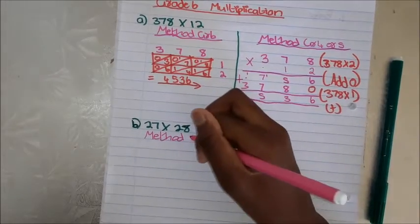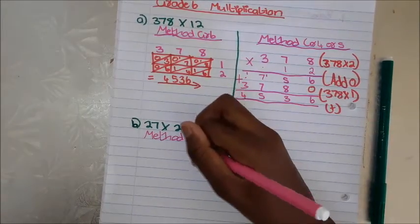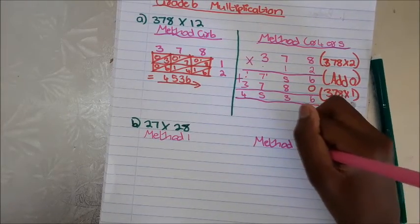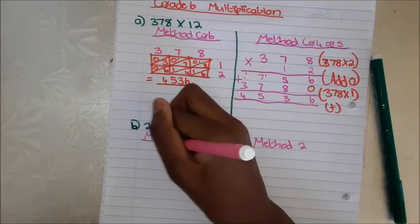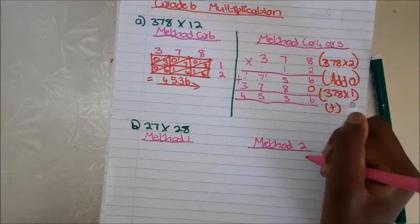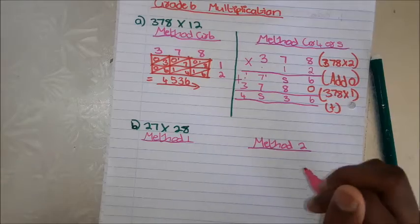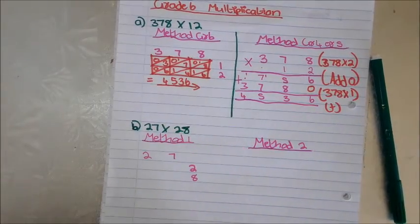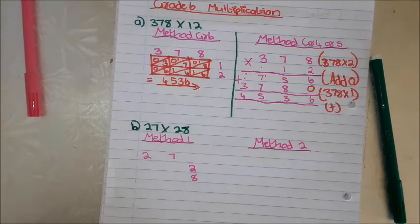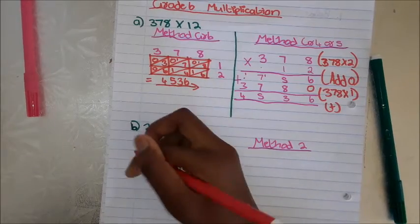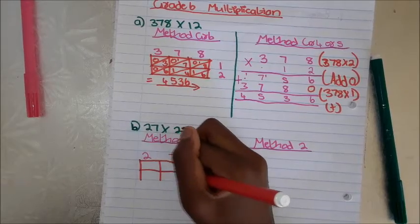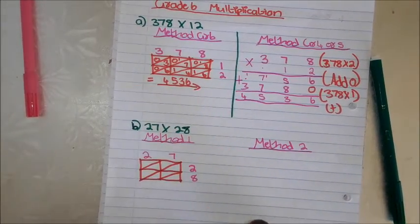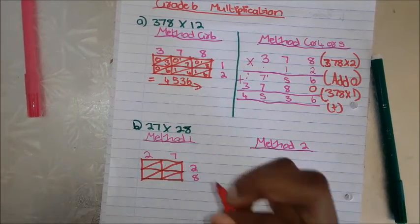Method 1 is the Grade 6 method, and Method 2 is over there. I'll say 27 times 28. Now I'll take my red pen and set up the grid. For a person wearing earphones, I'll speak up.